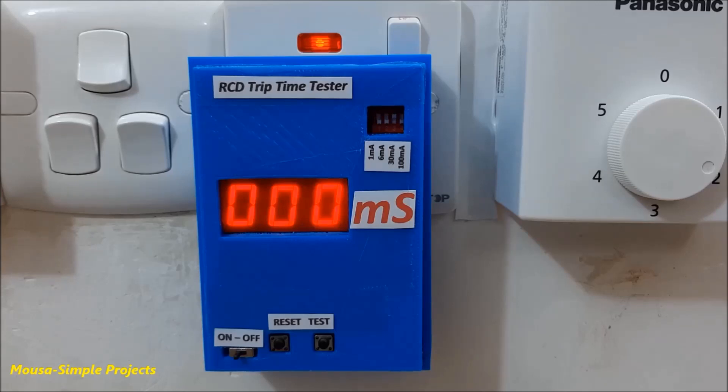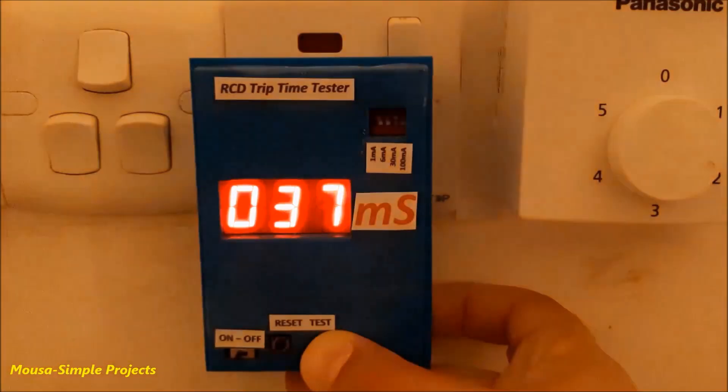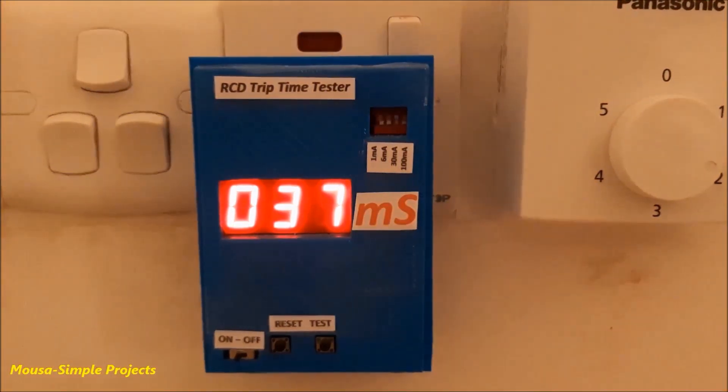I switched on this circuit, connected it to the mains voltage, and selected 30 mA of leakage current because my RCD type is 30 mA. By pushing the test button, the RCD traps and this circuit calculates the trap time.